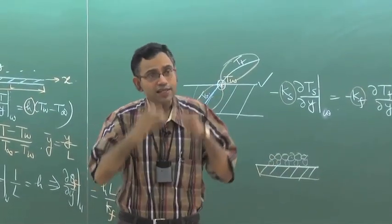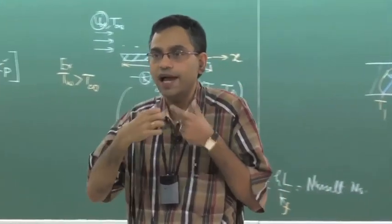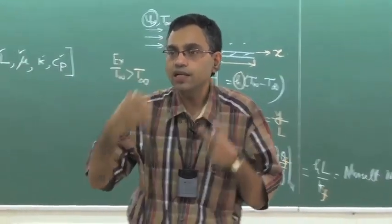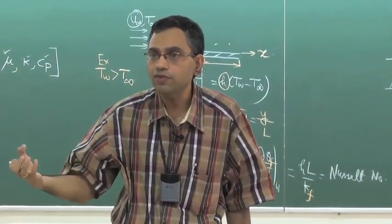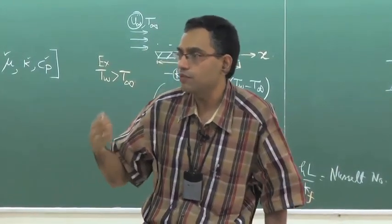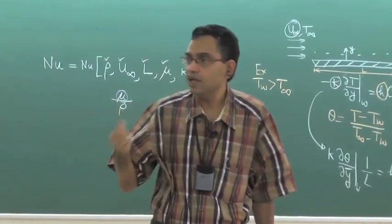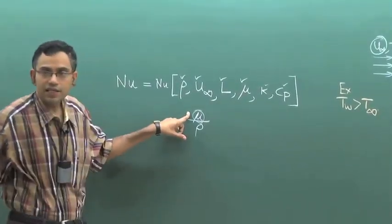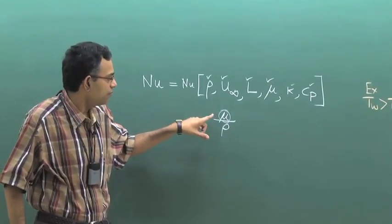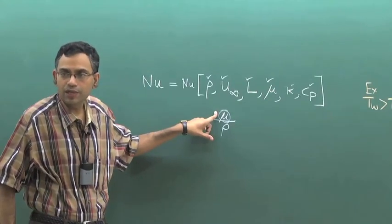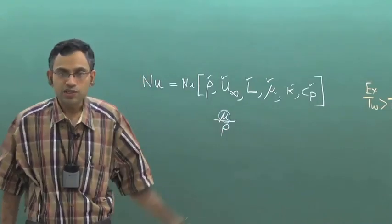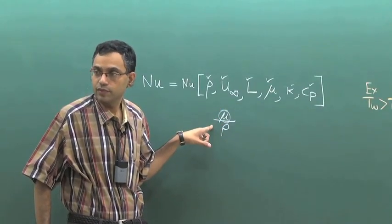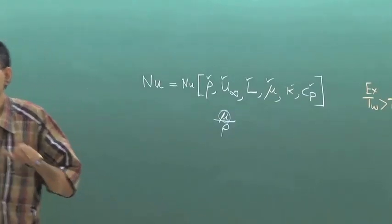The fluid receives the message that there is a momentum disturbance, but the fluid has its own inertia and tends to sustain its own momentum — by virtue of the fluid's inertia, which is proportional to density. So μ is the tendency of the fluid to undergo a change in momentum, and ρ is the tendency to sustain the momentum. Therefore μ/ρ represents the relative ability of change of momentum with respect to the tendency to sustain it.